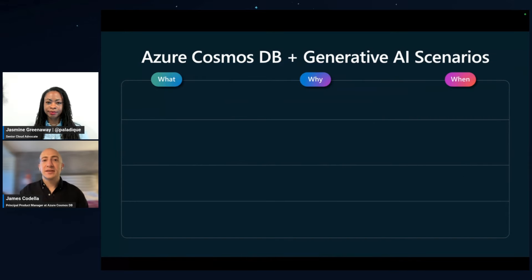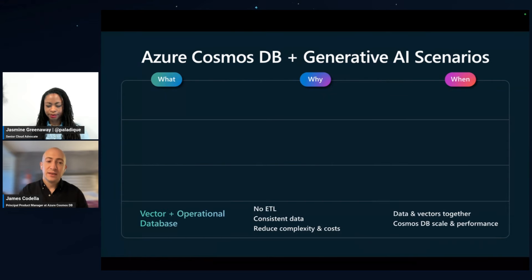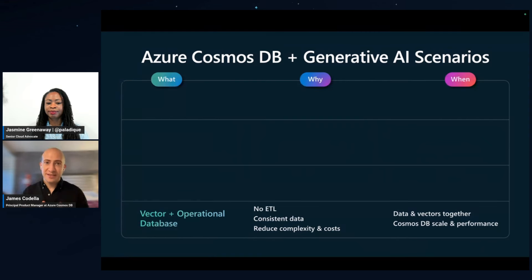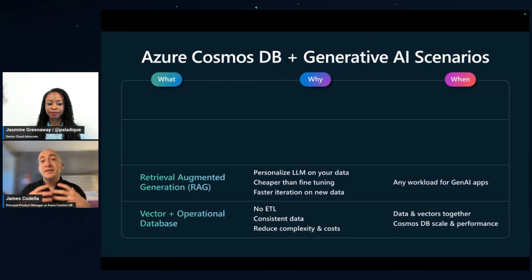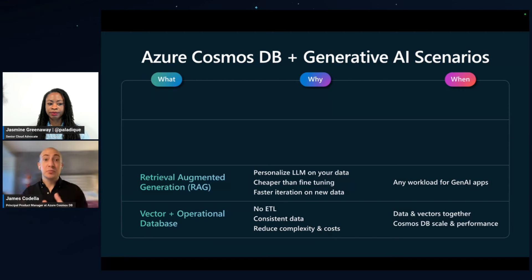Let's talk about some of the scenarios for generative AI uses for Cosmos DB. First, we have a vector and operational database in one — storing your vector data and your metadata or other document data together in one collection, in one document. This removes the need to ETL or transform your data and shift it to a dedicated vector database. You can have one source of truth for your ground data and your vector data, which reduces complexity and costs for your generative AI applications. Built on top of the operational database with vector search, we have retrieval augmented generation — finding the most relevant data in your database to ground your large language model and personalize it for your scenario. You can do this with Cosmos DB vector search today.